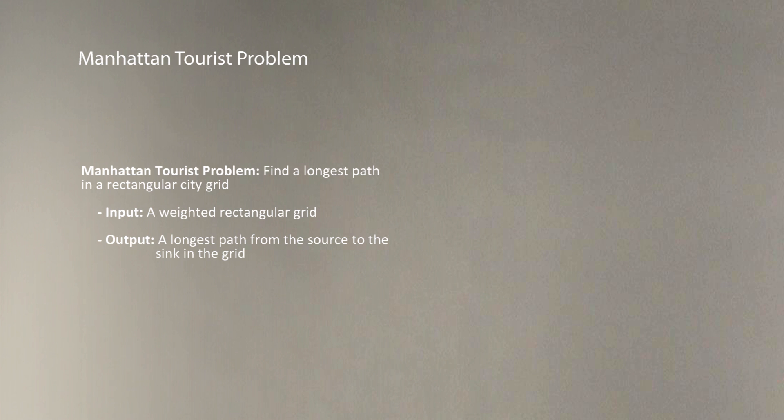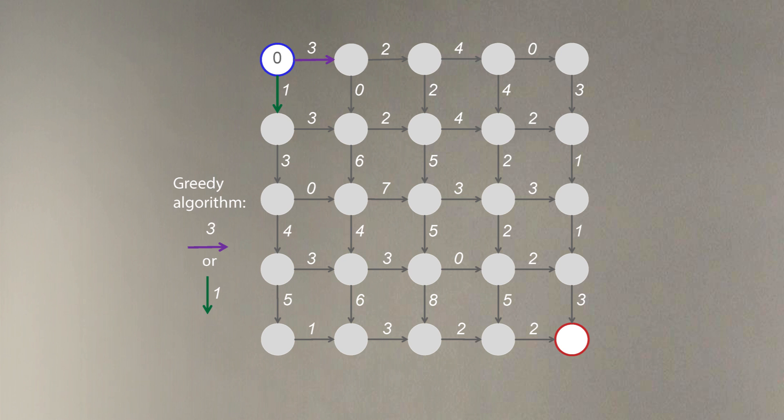We need to solve the Manhattan tourist problem. The input is a weighted rectangular grid, and the output is the longest path from the source vertex, the vertex shown by blue, to the sink vertex, the vertex shown by red, in this grid.